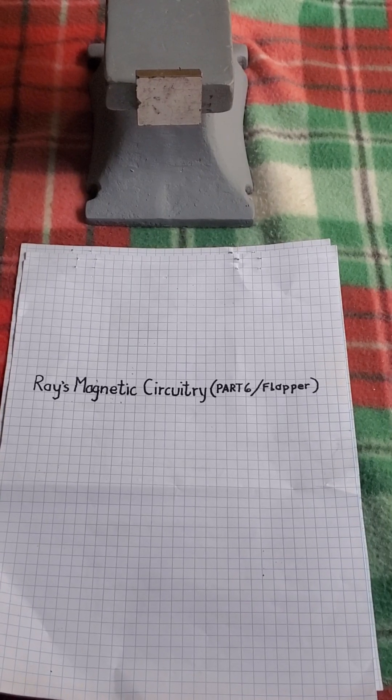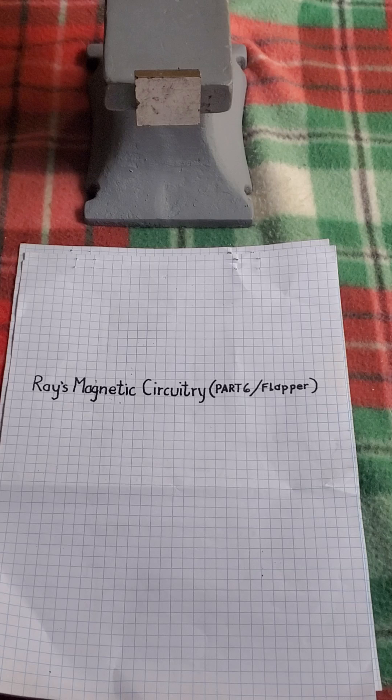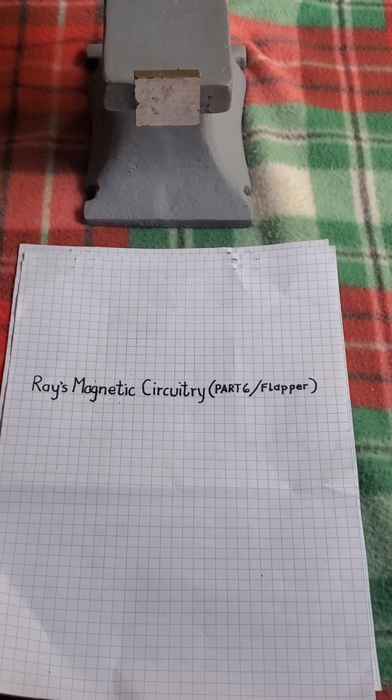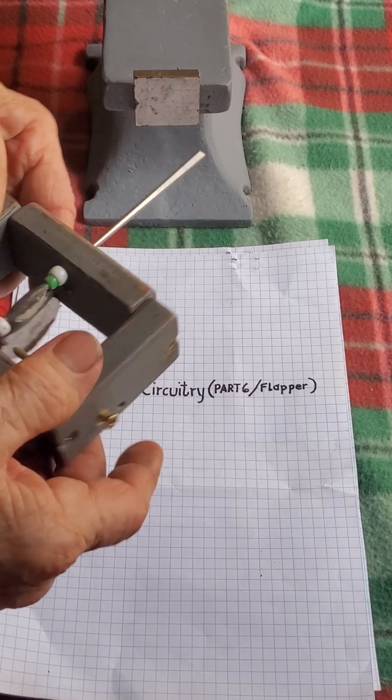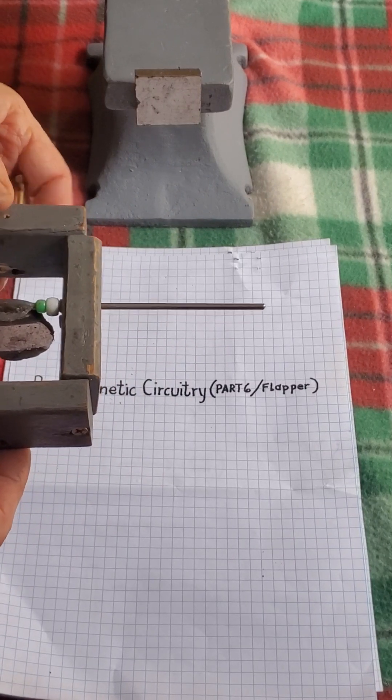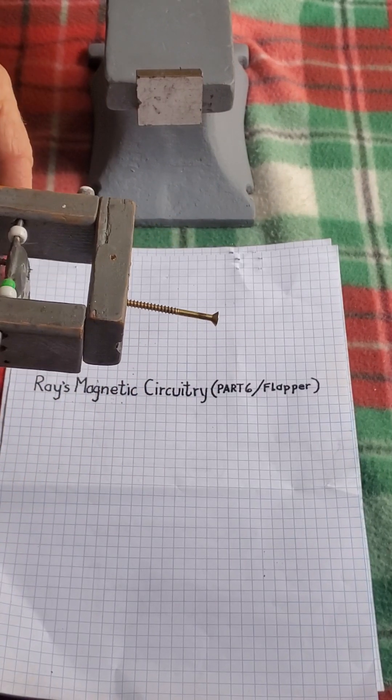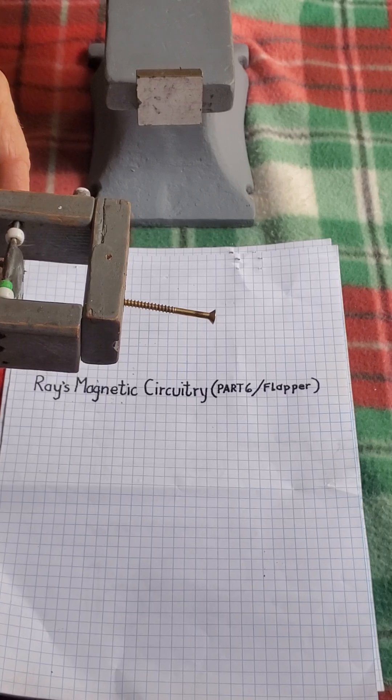This is Ray's Magnetic Circuitry, Part 6, Flapper. I have not covered the flapper. In my designs, every component has a purpose towards over-unity effects.